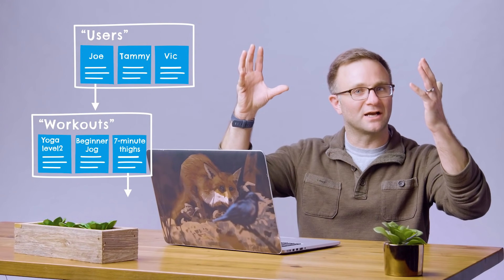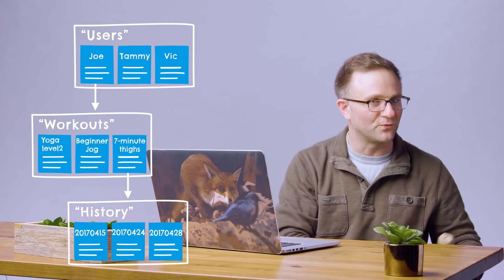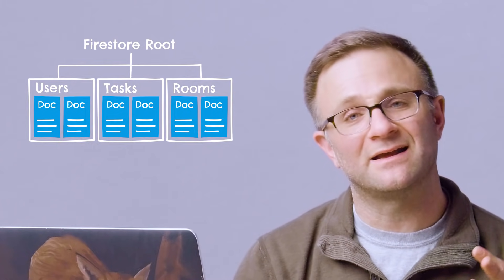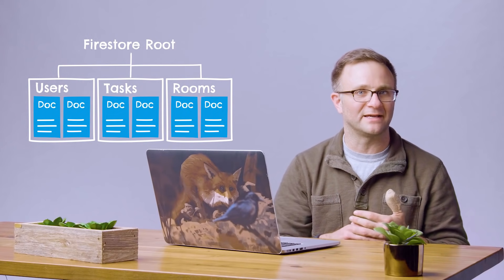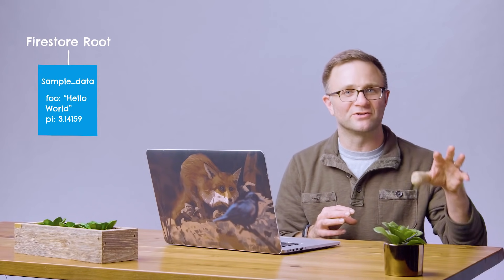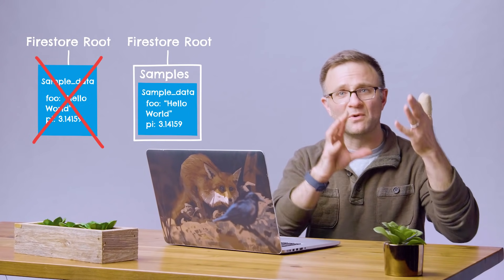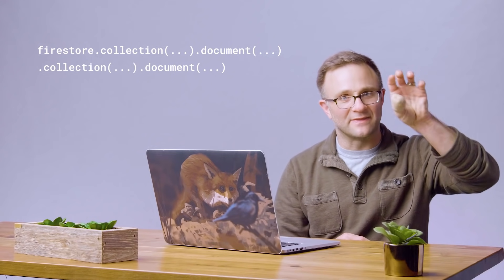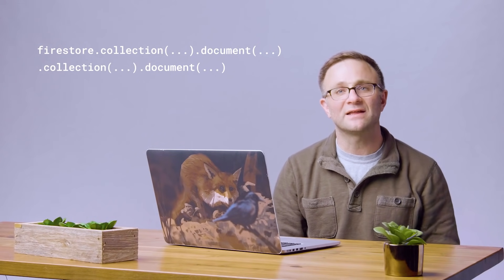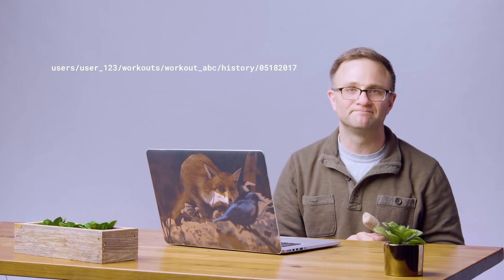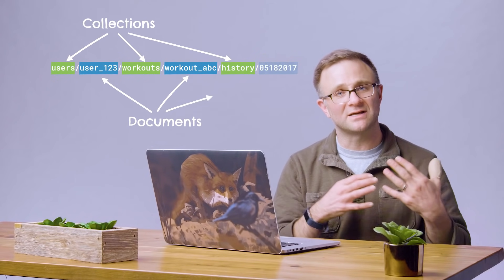So it's very common to see a collection containing a bunch of documents, which then point to sub-collections that contain other documents, and so on. The fourth rule is that the very root of a Cloud Firestore tree can only contain collections. In most real applications this is intuitive — you'll have a users collection, a tasks collection, and so on. As a general rule, you're going to be drilling down into your data by alternating between collection, document, collection, document, until you get to the document containing the data you want. You'll often specify the document or collection you want by creating a path to it.